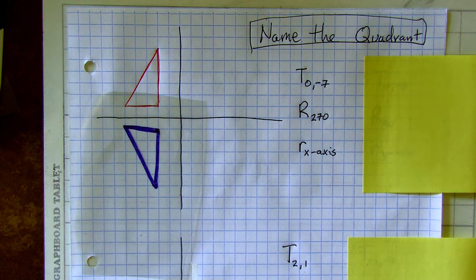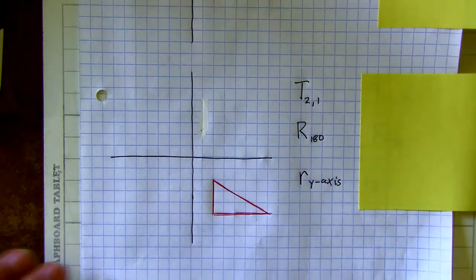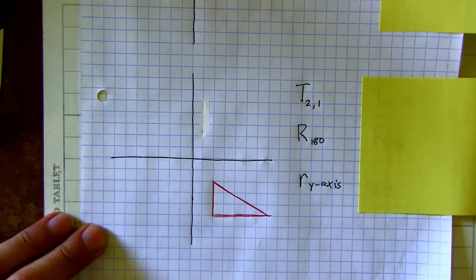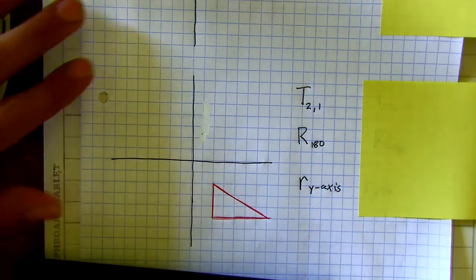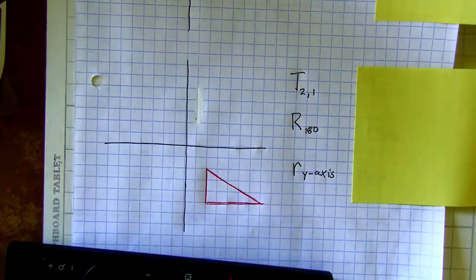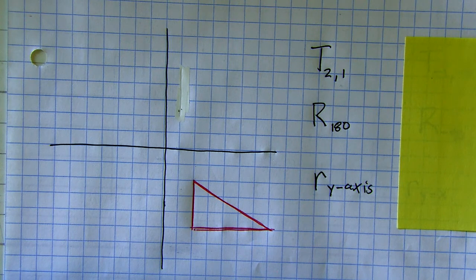We've got 20 minutes. Let's do these ones fast. Look at all three and make a list — translation (2,1): that doesn't even get out of the quadrant, it just goes two to the right, up one, ends up right here. Rotation 180 is going to end up in quadrant two, rotating across. Reflection across the y-axis — that would be easier to visualize.